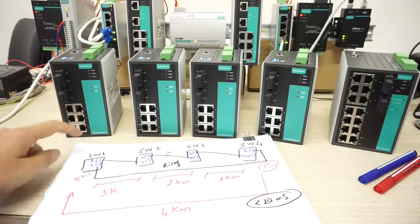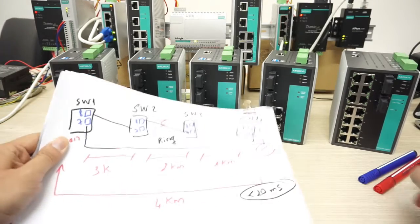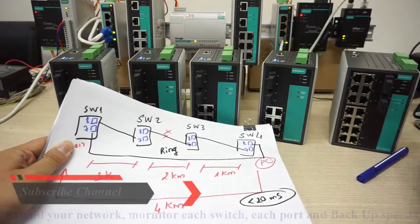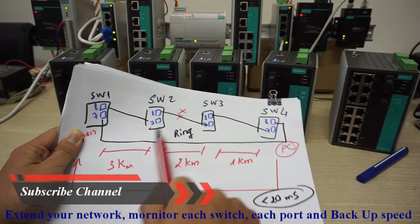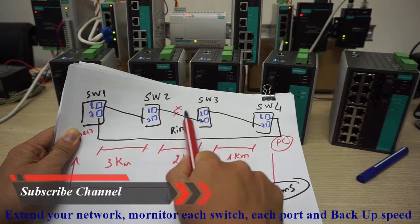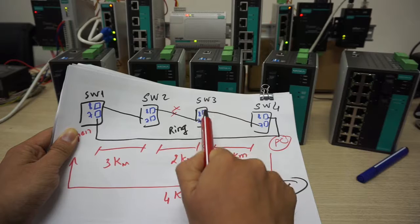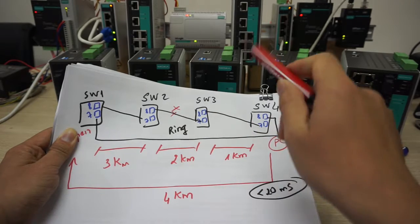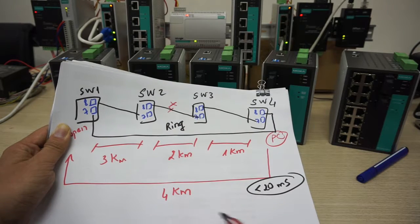Now the distance between switch 1 to 2 is 3 km right here. I can use the pen right here. And then 1 to 2 is 3 km, 2 to 3 is 2 km, 3 to 4 is 1 km, and then back from 4 to 1 is 4 km right here.